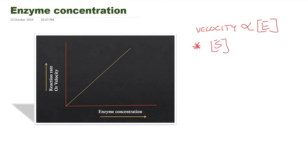You need to remember this rate is directly proportional as long as the substrate concentration is adequate. That means in this reaction there should be a sufficient amount of substrates. As long as substrate concentration is sufficient, the rate of enzyme catalyzed reaction is directly proportional to the concentration of enzyme. This kinetic property can be used to find out levels of enzymes in different tissues, plasma, or serum.